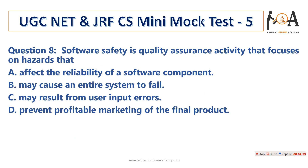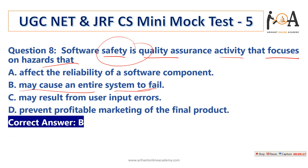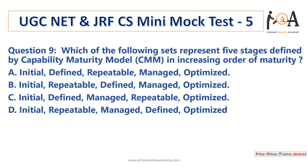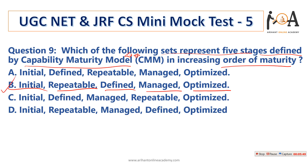The next question: software safety is a quality assurance activity that focuses on hazards that may cause an entire system to fail. Option B is the correct answer — it is a previous year UGC NET question, so go through it. The next question asks for the five stages of CMM — the Capability Maturity Model. The correct increasing order is: Initial, Repeatable, Defined, Managed, and Optimizing. Option B is the correct answer.